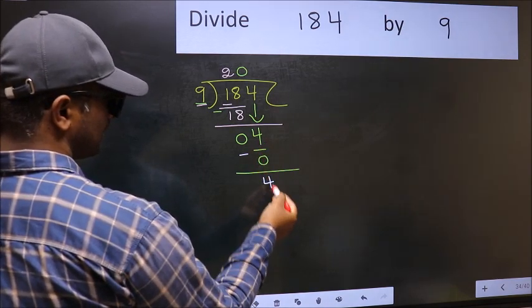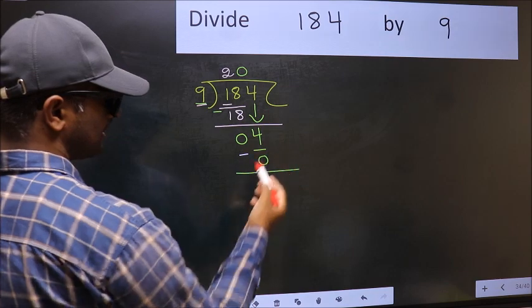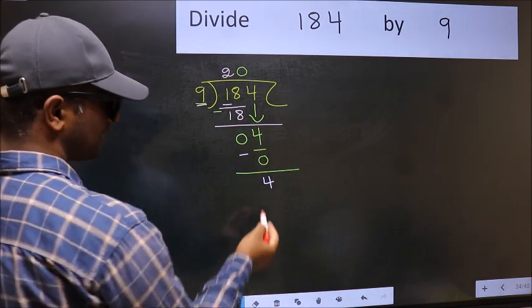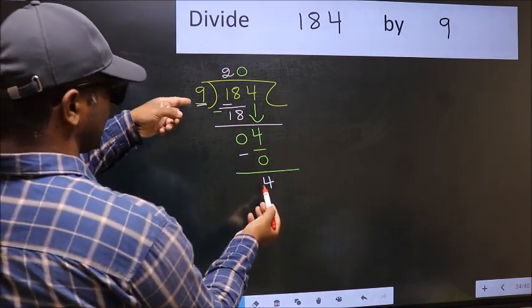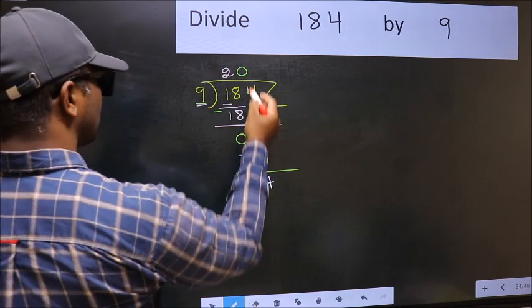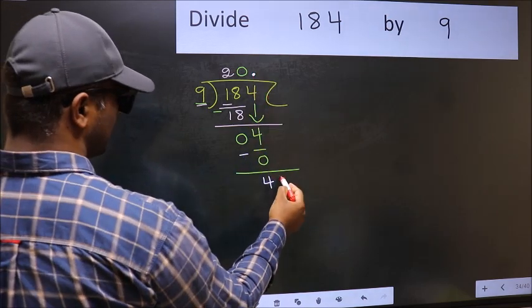Over here, we did not bring any number down. And 4 is smaller than 9. So now we can put dot and take 0.